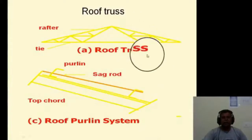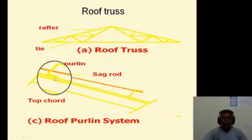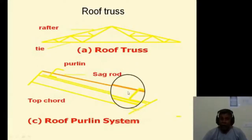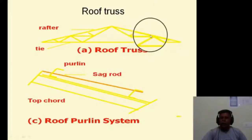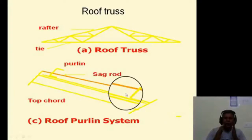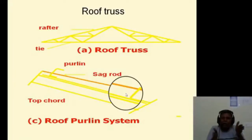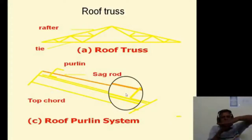We have already seen the rafter, tie, and purlin. The purlin placement depends on the panel points. If you have a central panel, you can use intermediate purlins. The spacing depends upon the length of the roof covering material — for one AC sheet, there will be two overlapping supports.